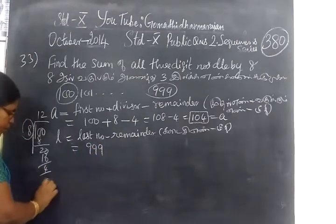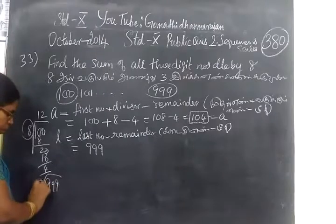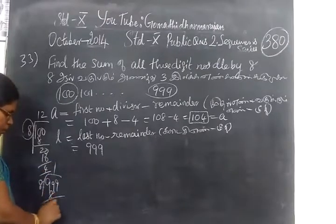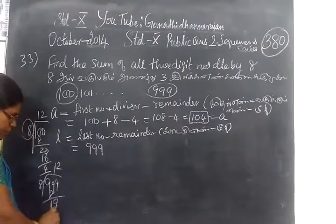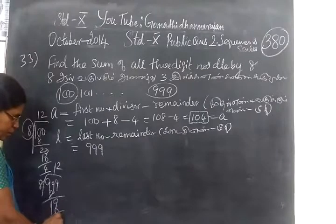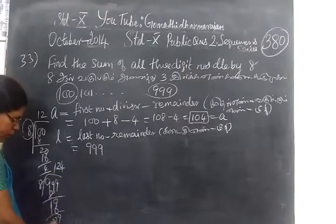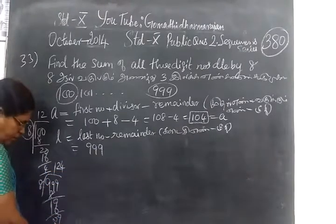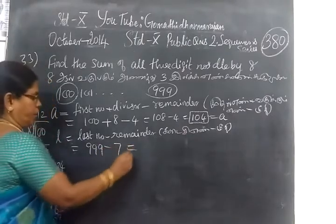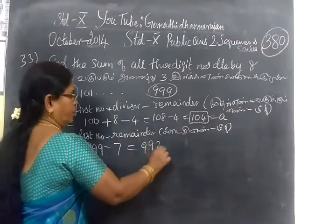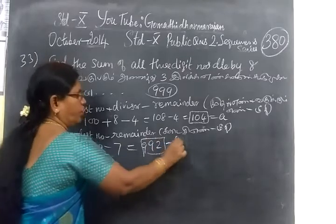This you have to divide by 8. 1 times 8 balance, 2 times 16 balance, 3 times 24, 32 balance 7. So 999 minus 7 is 992. So this is known for L.